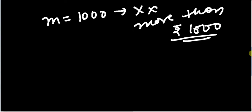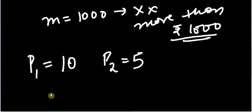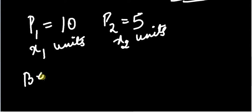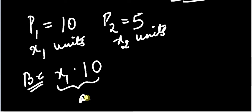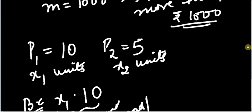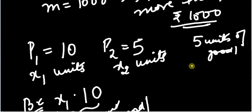Say the price of good 1 is 10 and the price of good 2 is 5, and say I am consuming x1 units of good 1 and x2 units of good 2. Then my budget constraint will be: I am consuming x1 units and the price of 1 unit is 10, so the total amount that I am spending on good 1 is 10x1. For example, if I am consuming 5 units of good 1 and the price of 1 unit is 10 rupees, so I am spending 50 rupees on good 1.